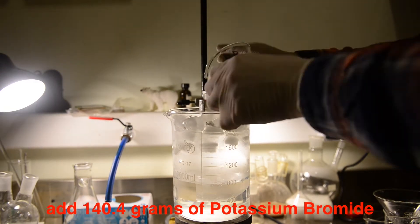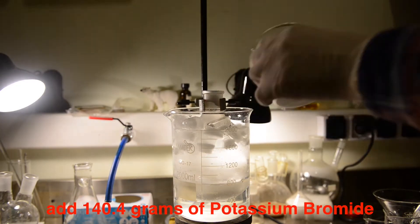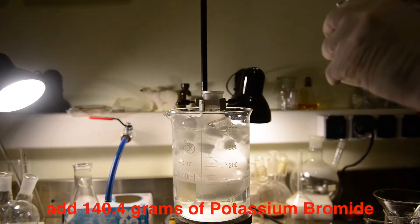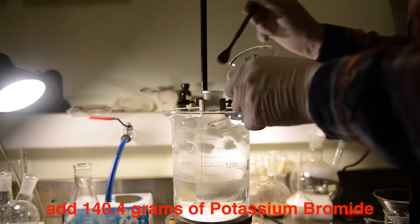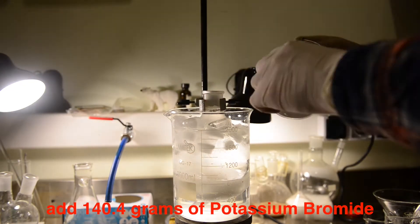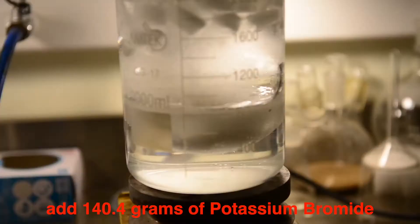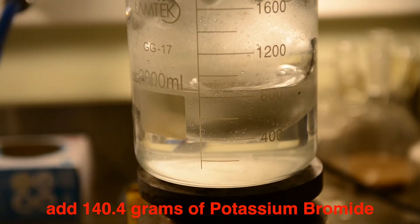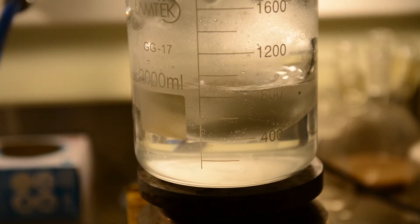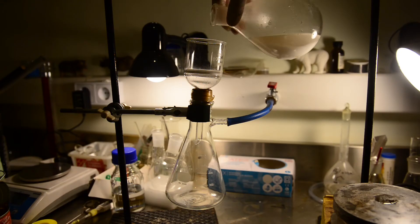To the diluted sulfuric acid mixture, 140.4 grams of potassium bromide was added. The mixture was stirred for 10 minutes, and all solids formed were filtered with a vacuum. On the first run, I had been following the procedure meticulously, but I failed. As you will see, it is not because of this step,